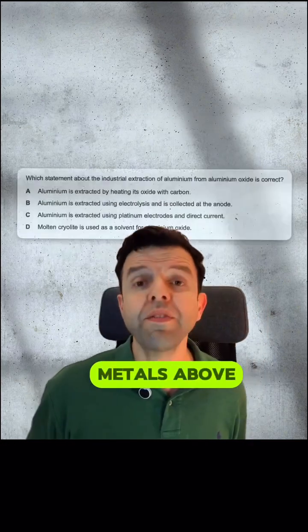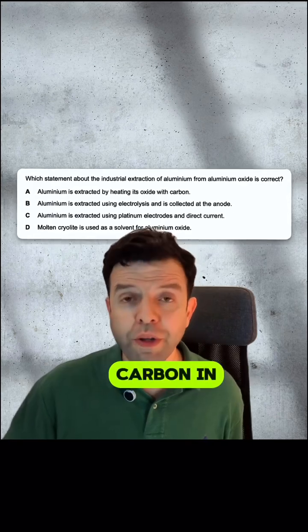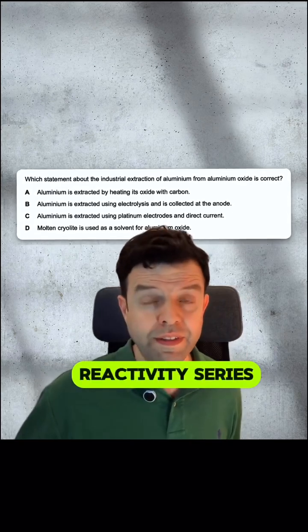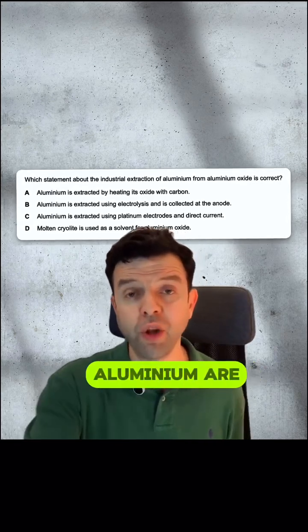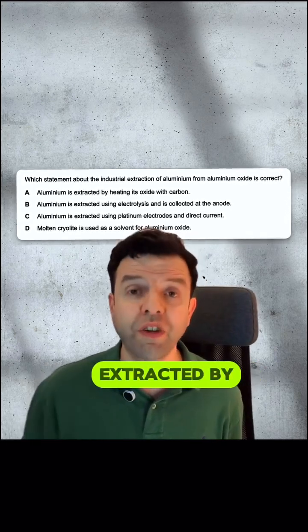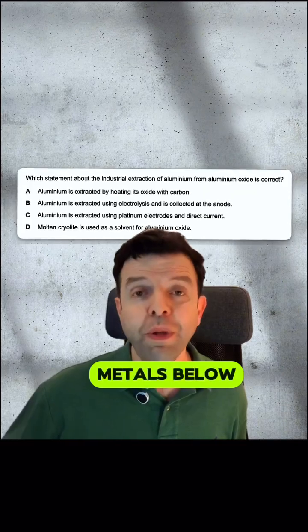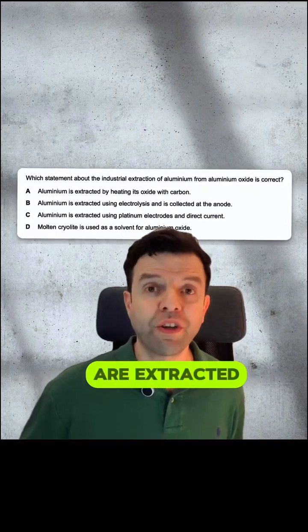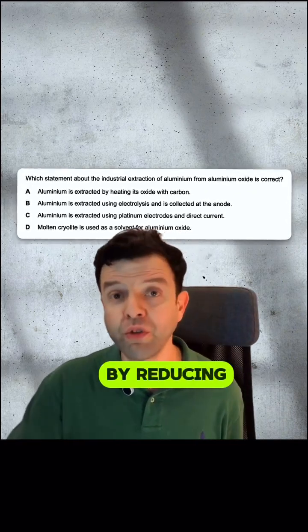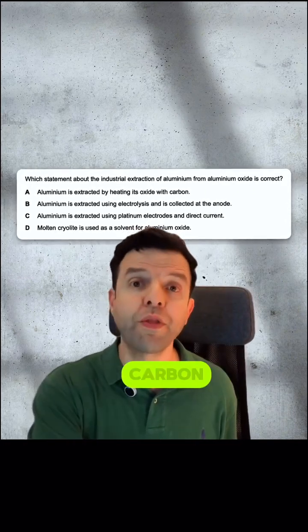Metals above carbon in the reactivity series, such as aluminium, are extracted by electrolysis. Metals below carbon are extracted by reducing them with carbon.